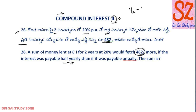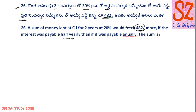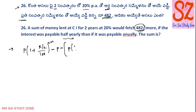We are going to discuss compound interest problems. The compound interest will be 482. What is the compound interest? It is A minus P, and next minus r. P into 1 plus r by 100.